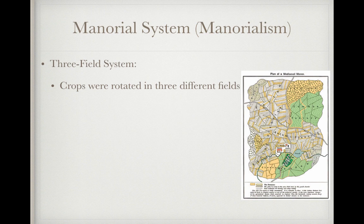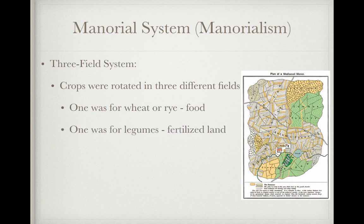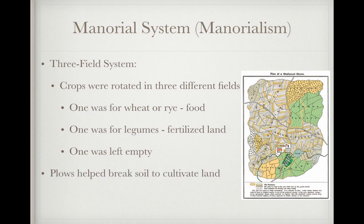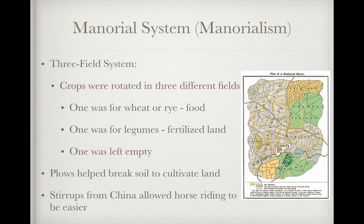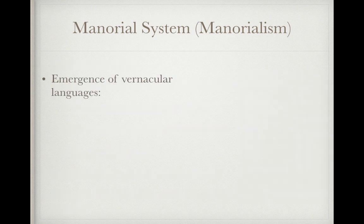The three-field system was widely used in the manor system. Crops were rotated across three fields: one for wheat or rye for food, one for legumes to fertilize the soil, and one left empty. Fields were rotated each year. Plows helped break soil for cultivation, and stirrups — introduced from China — made horse riding easier, showing cultural diffusion from China to Europe.